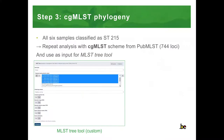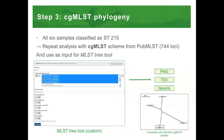As all six isolates were classified as sequence type 215, I repeated the analysis with the Core Genome MLST scheme from PubMLST containing 744 loci, and the resulting output was used as input for our MLST tree tool. This tool takes MLST output files for several samples and generates the corresponding phylogenetic tree in various formats. As you can see in this network representation, three of the six samples have identical cgMLST profiles.